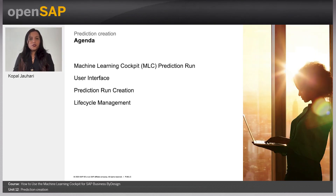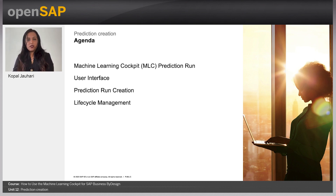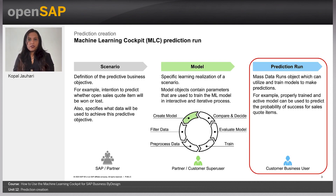As part of this unit we would be covering what is machine learning's prediction run, how on the UI you can see its related details, how prediction runs can be created and its entire life cycle. Prediction runs are mass data run objects defined per scenario which can utilize an existing active model of a scenario to run predictions for a selected prediction data set.